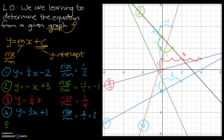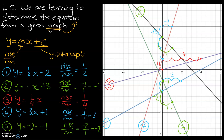Our final graph, number five, is the green line. The y-intercept: following the line back, it intercepts at negative one, so I'll write minus one. For the rise over run, I follow the graph down to a clear point — it goes down two, meaning negative two, and runs one, which is positive one. Rise over run is negative two over one, which is negative two. So the equation is y equals negative two x minus one, where negative one is the y-intercept and negative two is the gradient.